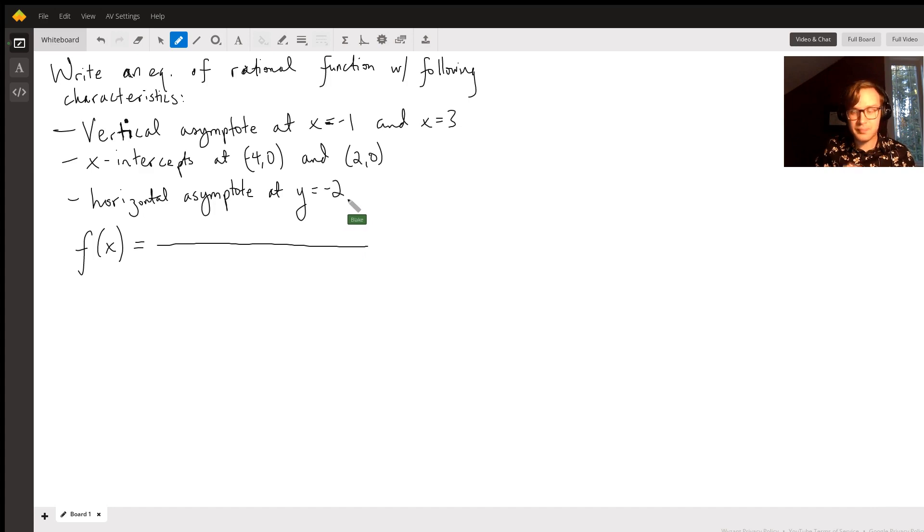Let's start with the easier characteristic, which is the x-intercepts would have to be at negative 4 comma 0 and 2 comma 0. That means that when you set this function equal to 0, you should get x equals 2 and x equals negative 4. So how would we do that?